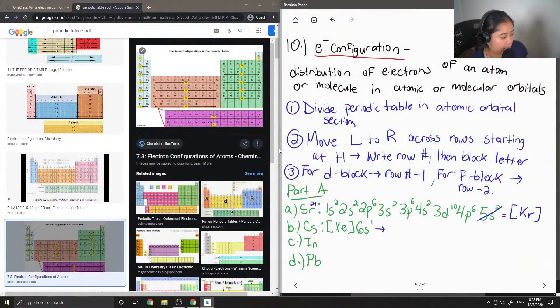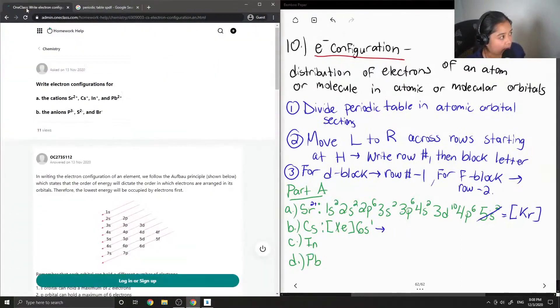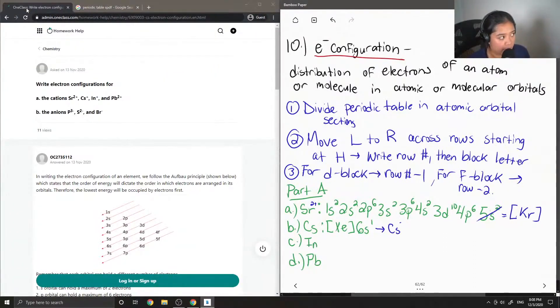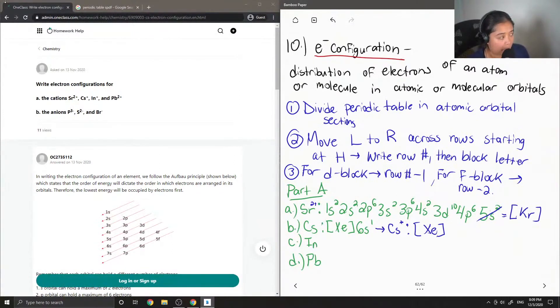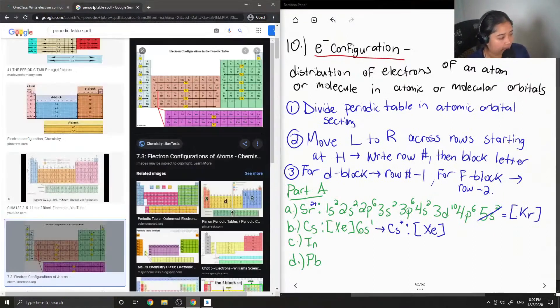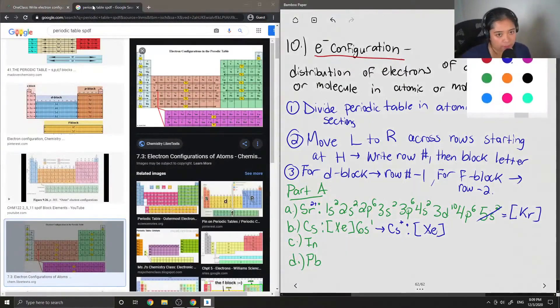Okay, so now the question asks for cesium plus 1. So again, we just have to remove this last electron. And it has an electron configuration that is the same as xenon.